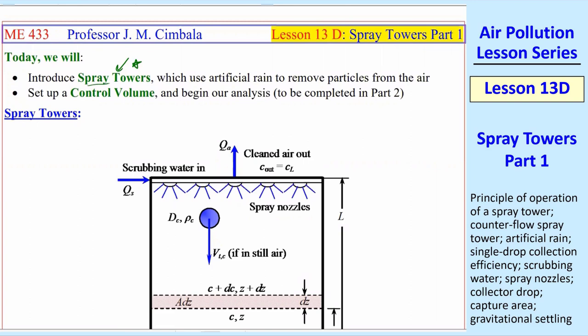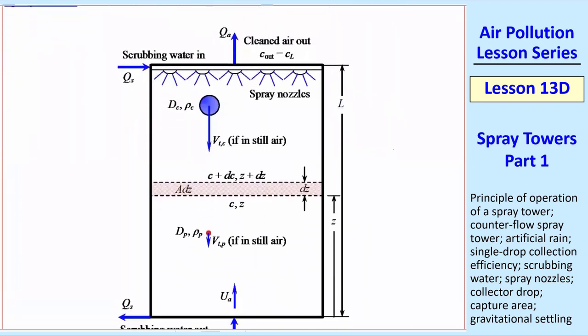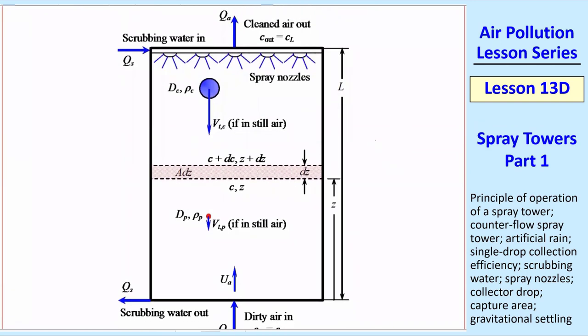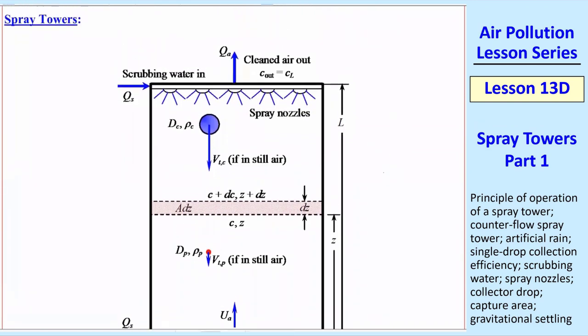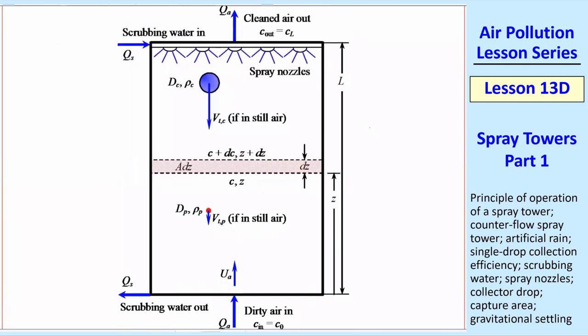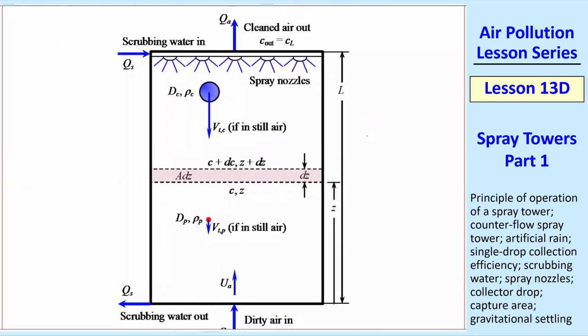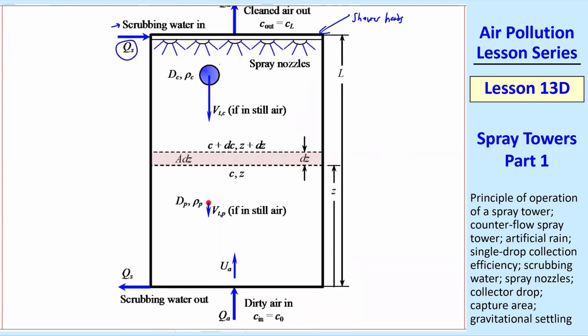So what we'll do is set up a control volume and begin our analysis to be completed in Part 2. Let's look at a schematic diagram here. We have a typically cylindrical, although it can be any cross-section like a rectangle, that's called a spray tower. Some people call it a spray chamber. What there are is a whole bunch of basically shower heads that spray small drops of water from the top. The scrubbing water we call that comes in with some volume flow rate Qs. This is greatly exaggerated size, but you have all these raindrops that are falling down.